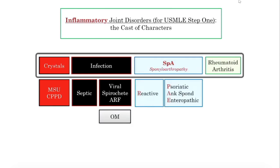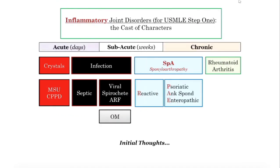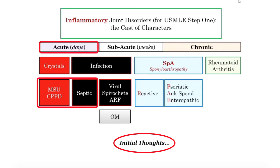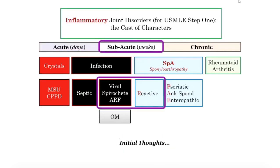Here's the first breakdown. These are your inflammatory joint disorders, and I want you to start thinking about initial thoughts when they give you joint patients. How acute? If these are days — less than seven days — we're talking crystal or septic. That's your major differential. Subacute, like a couple of weeks, now we're getting into reactive arthritis. Reactive versus septic versus crystals: the time course kind of gives it away.